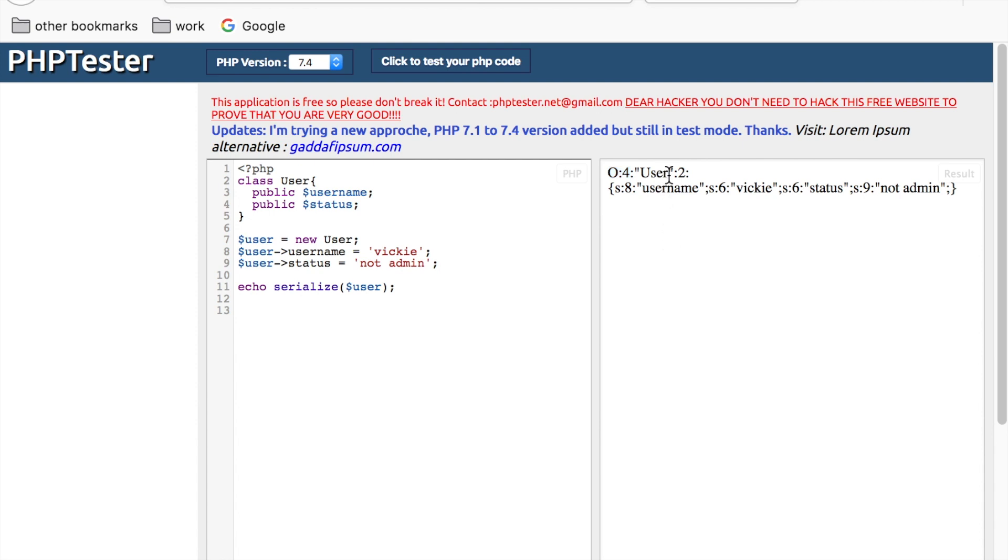It has two properties. The first property has the username and the value viki. And the second property has the name status and the value not admin. Both of these properties are strings.